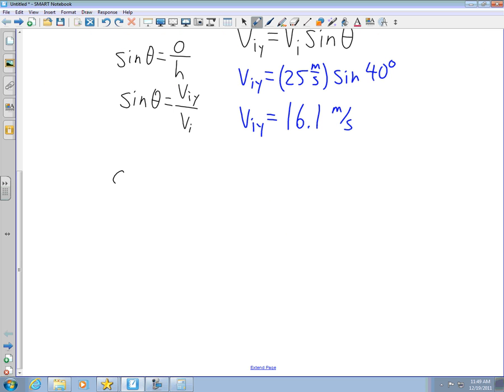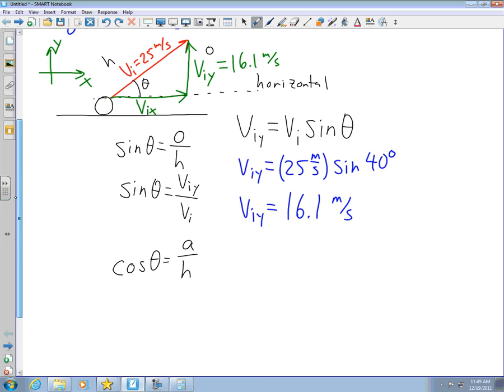To find horizontal, I use cosine. Cosine theta is adjacent over hypotenuse. Looking back up here, this is the adjacent side to the angle, the VIX, the horizontal component. So this formula becomes cosine theta equals adjacent VIX over VI.